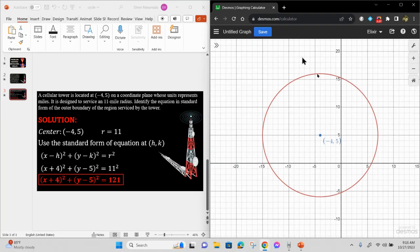As you can see, this is our center which is (-4, 5), and this is the circle that we formed using the equation we solved. This means this is how large an area the cellular tower can service.